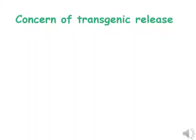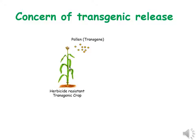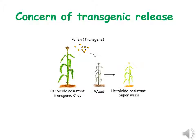Before discussing transgenic mitigation, one of the major concerns with transgenic crops released for commercial cultivation is the danger of unexpected spread of transgene to wild relatives or weeds. Several approaches for restricting transgene escape to the natural environment have been developed.